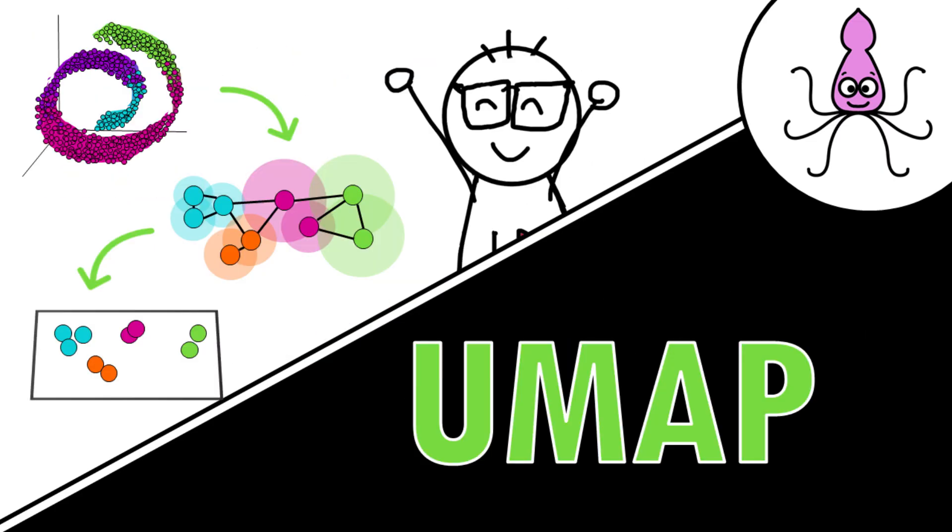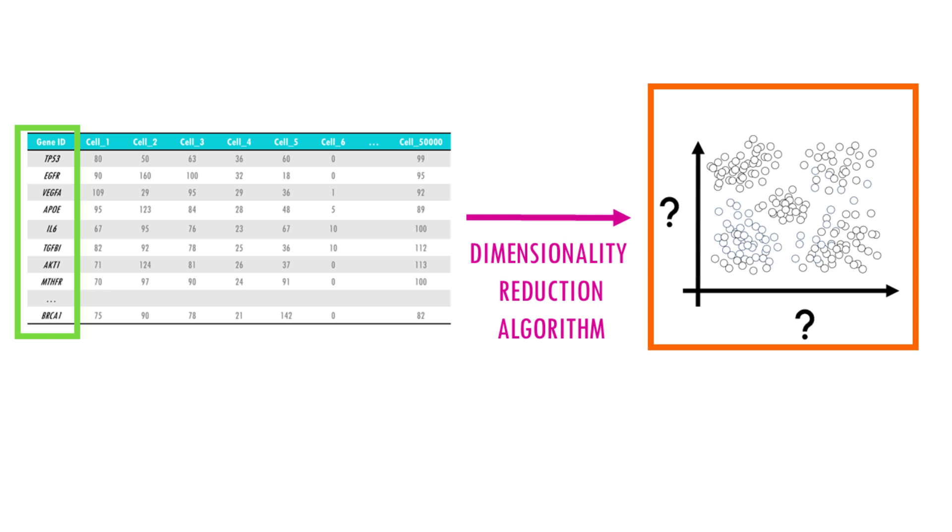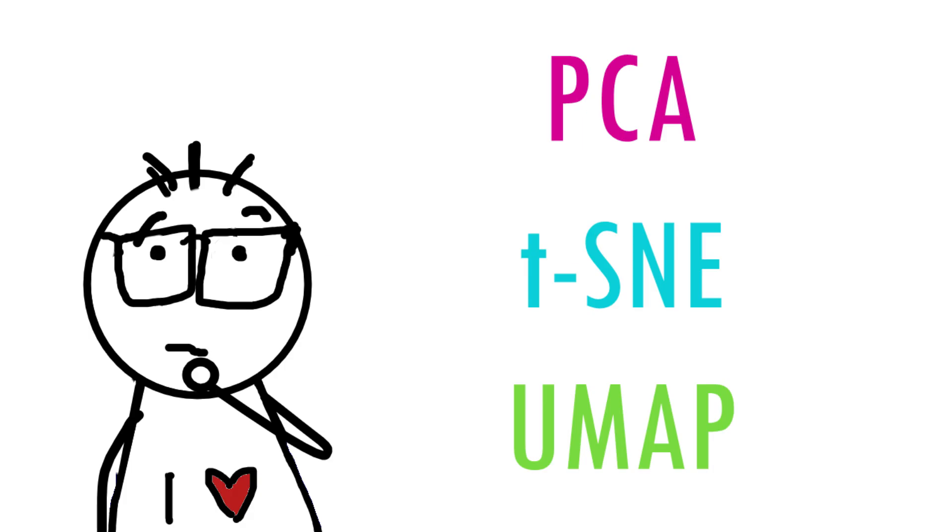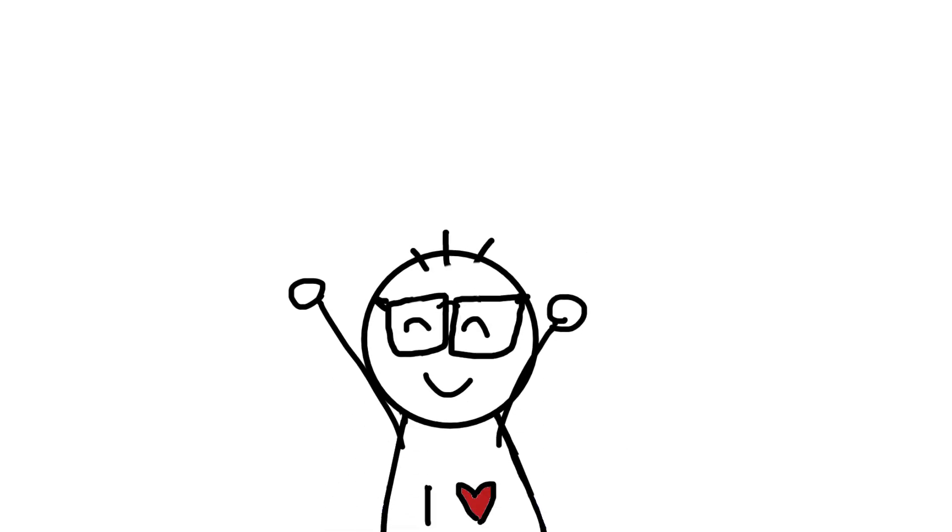Nice. So we've gone through PCA, TSNE and UMAP, three popular techniques for dimensionality reduction. All three methods are great options for our main problem, visualizing a large multi-dimensional dataset with many genes. So which one to choose? What are the exact differences between them? In my next video, we will cover differences between PCA, TSNE and UMAP and when to use each one of them. Squittastic!